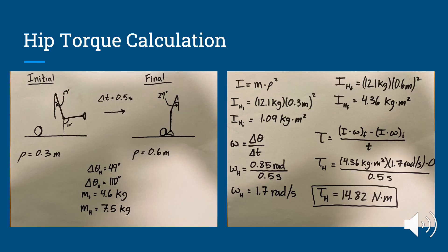Now we're going to do a sample calculation for hip torque. We sketched out a leg kicking a soccer ball in initial and final states. The initial is at the peak of backswing and the final is the leg making contact with the ball. Our initial angles are a 29-degree extended hip and a knee at 110 degrees from the y-axis. The final state, 0.5 seconds later, is a 29-degree flexed hip and a knee parallel with the y-axis. The radius of gyration is 0.3 meters initial and 0.6 meters final. The shank mass is 4.6 kilograms and the thigh mass is 7.5 kilograms, combined for the hip torque calculation since the hip is moving both the shank and thigh.